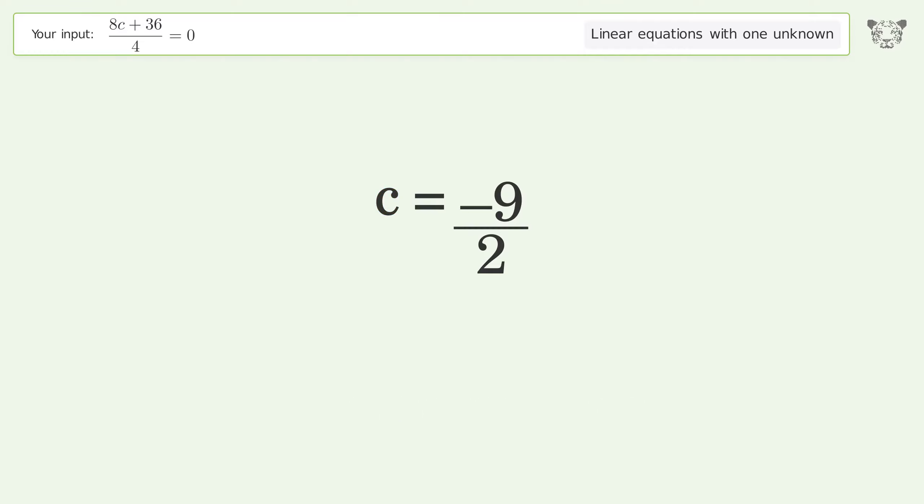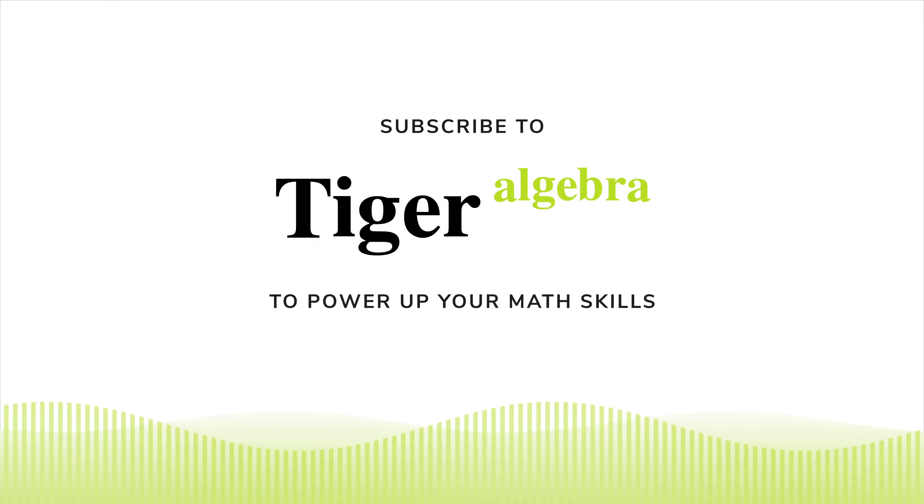And so the final result is c equals negative 9 over 2. Check it out using Tiger.